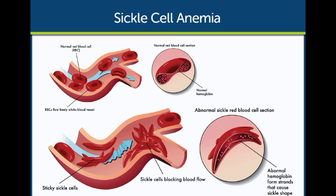Painful episodes can be triggered by factors such as stress, dehydration, or changes in temperature. Acute Chest Syndrome is a serious complication of SCD that occurs when sickle cells block blood vessels in the lungs, leading to chest pain, difficulty breathing, and a risk of respiratory failure. Stroke: sickle cells can also block blood vessels in the brain, leading to a stroke. Children with HBSS have a particularly high risk of stroke.